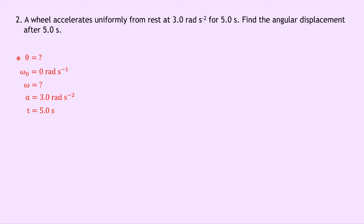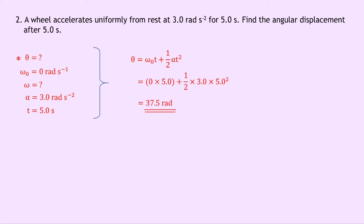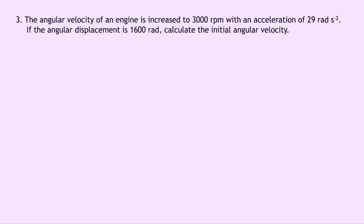Notice that we don't know the final angular velocity, so we're going to use the equation of motion that doesn't have omega in it: θ = ω₀t + ½αt². Substituting in our numbers, this gives us 0 times 5.0 plus a half times 3.0 times 5.0 squared. Notice this first term is times by zero, so that disappears. This simplifies to 37.5 radians.